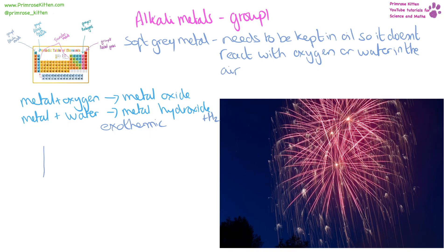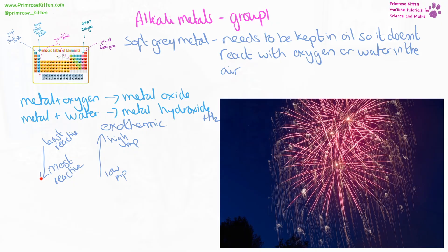The reactivity of alkali metals is most reactive at the bottom and least reactive at the top. Elements at the bottom are going to have a low melting point or boiling point, and a high melting point or boiling point at the top. Alkali metals want to lose an electron, and the ones at the bottom are most reactive because there is more shielding between the electron they want to lose and the positive nucleus in the middle.